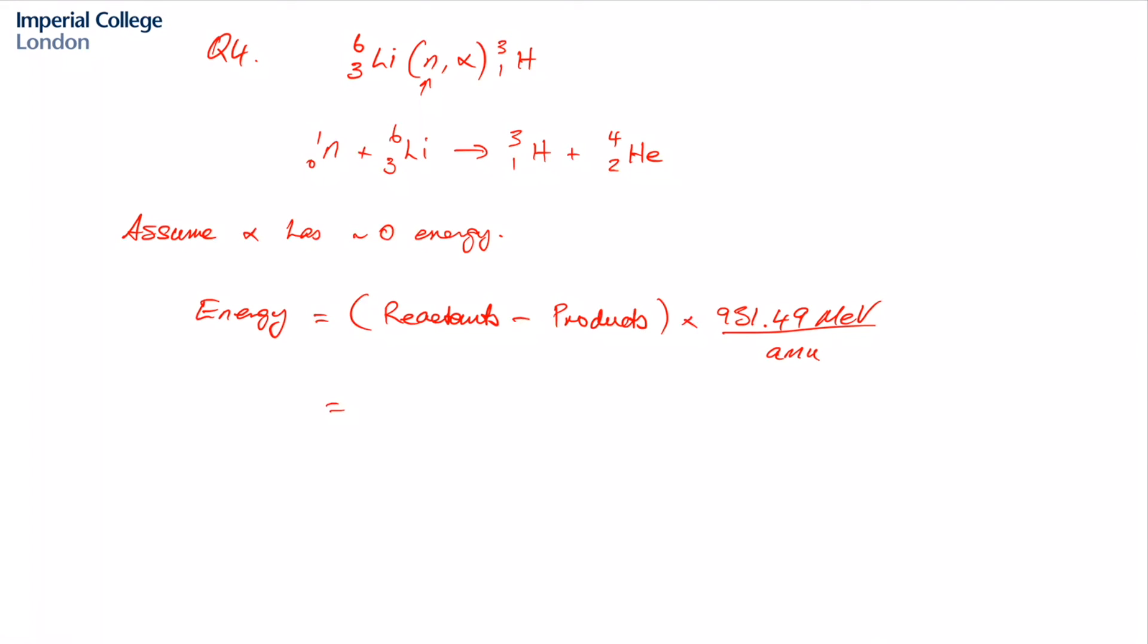And if we substitute in the numbers there that were given in the problem statement we end up with an answer which is 5.14 by 10 to the minus 3 atomic mass units multiplied by 931.49 mega electron volts per atomic mass unit, and if you multiply those together you get 4.78 mega electron volts and that's the answer for question 4.